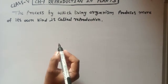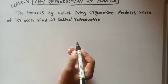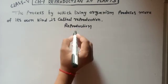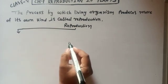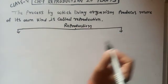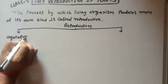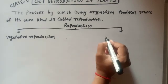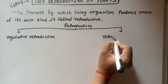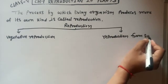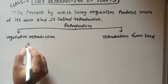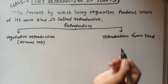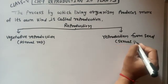Now we are trying to understand its types with the help of its classification. Reproduction is divided into two types: vegetative reproduction and reproduction from seed. Vegetative reproduction is a type of asexual reproduction, and reproduction from seed is a type of sexual reproduction.